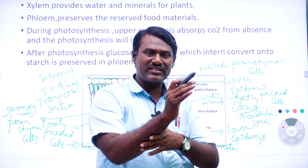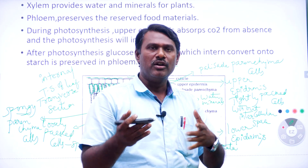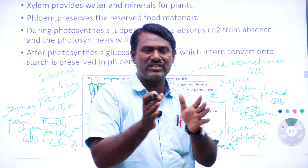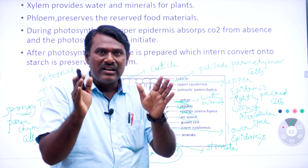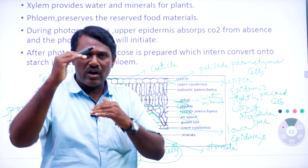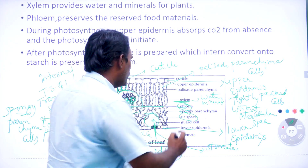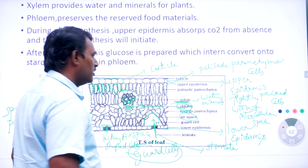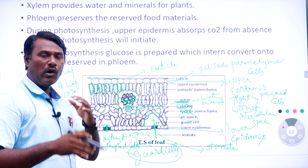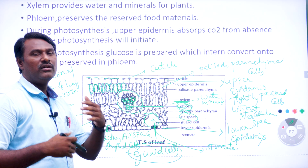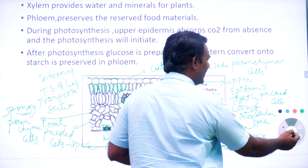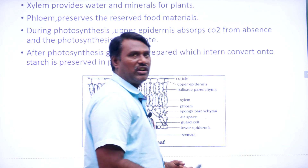After photosynthesis, glucose is formed. That glucose formed after photosynthesis is converted into starch, and finally that starch is preserved in the form of phloem. This is the complete process of photosynthesis and how the factors are taken by the leaf for photosynthesis. This is about the internal structure of the leaf.